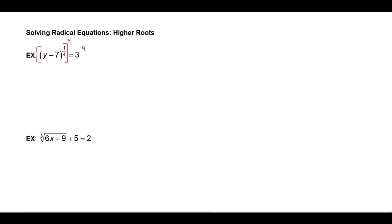I multiply the exponents, that would give me y minus 7 is equal to 3 to the fourth, and 3 to the fourth is 3 times 3 times another 3 times 3, that makes 81, so y is going to equal 88.